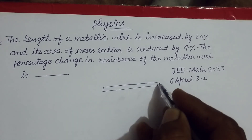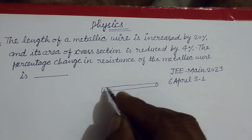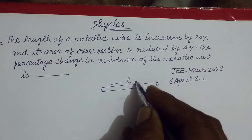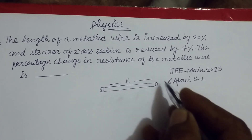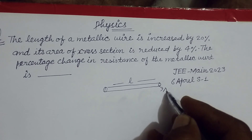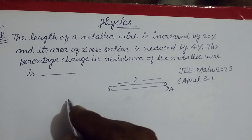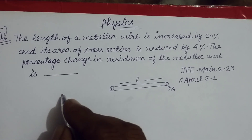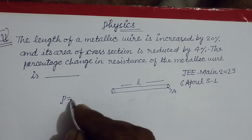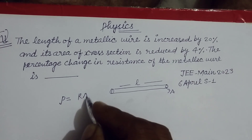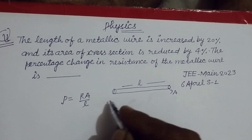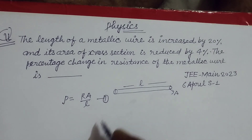So students, let the first condition of the metallic wire be: its length is L and cross section area is A, and its resistance is given by specific resistance Rho equal to R times A upon L. This is our first condition.